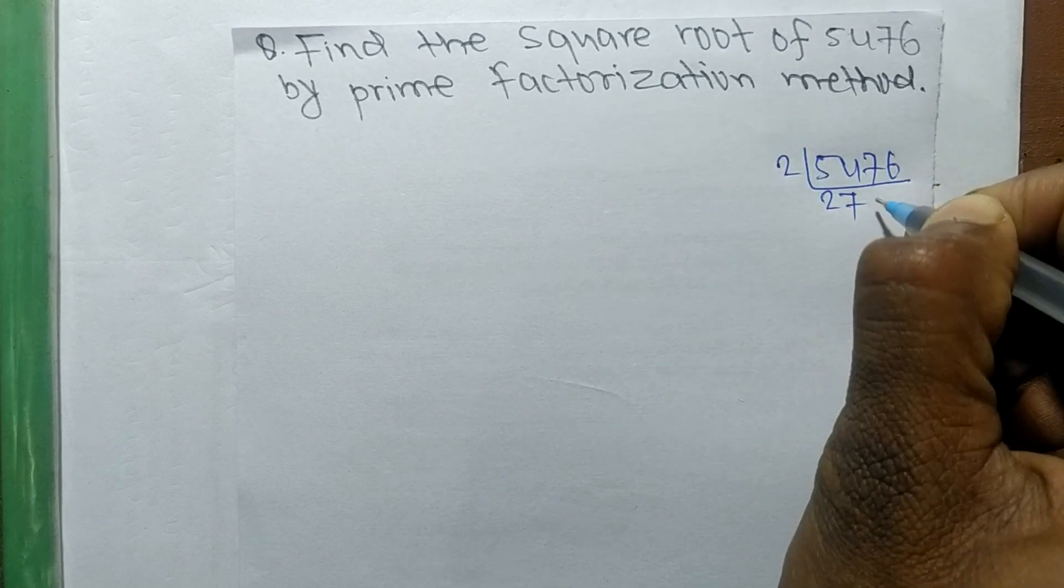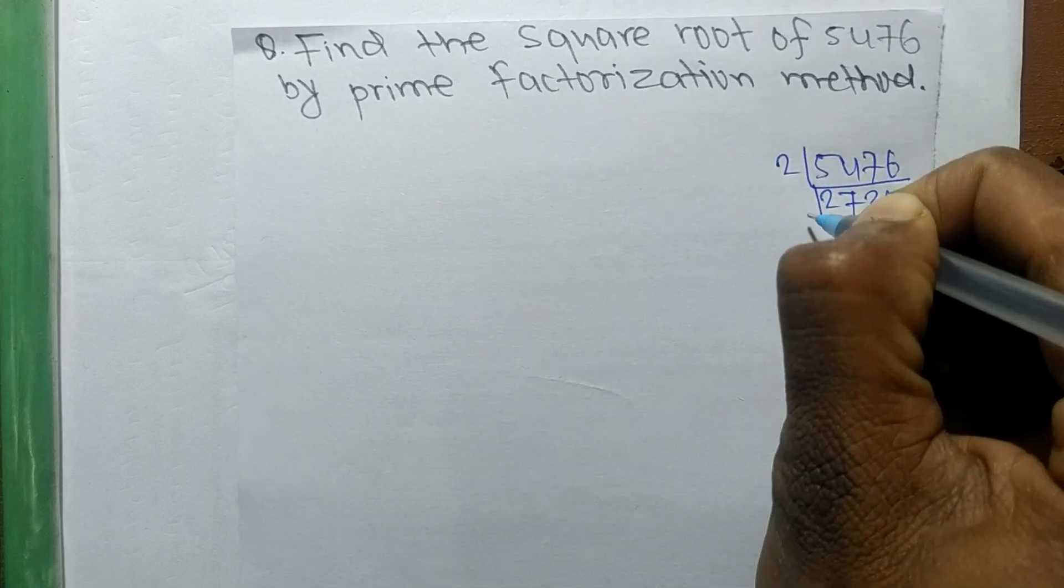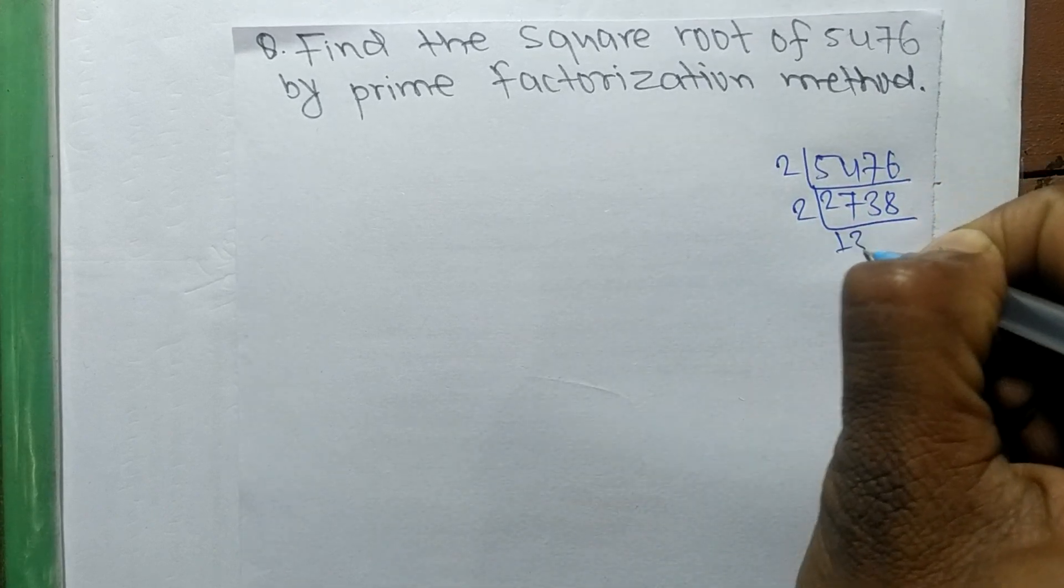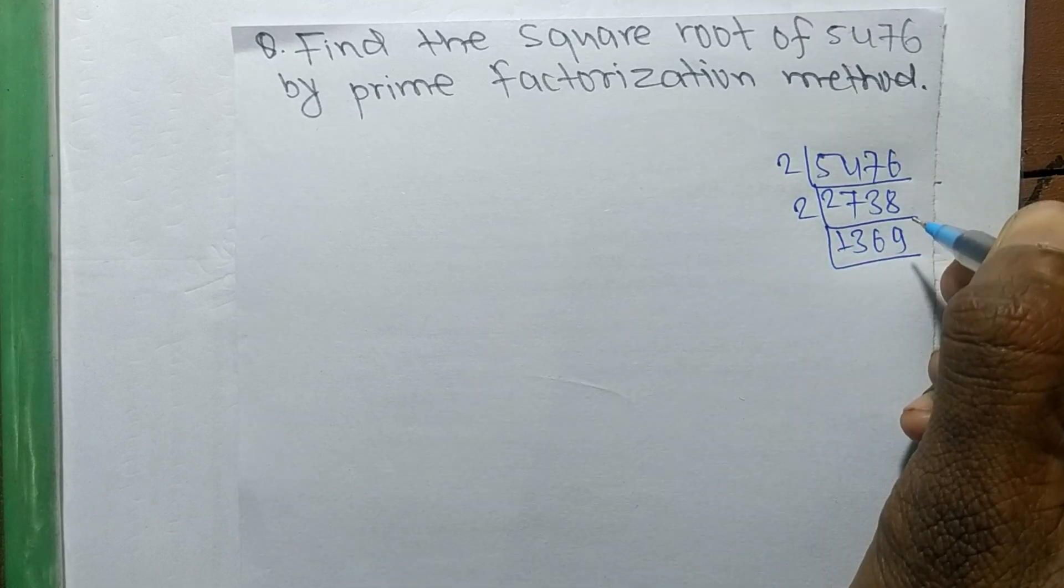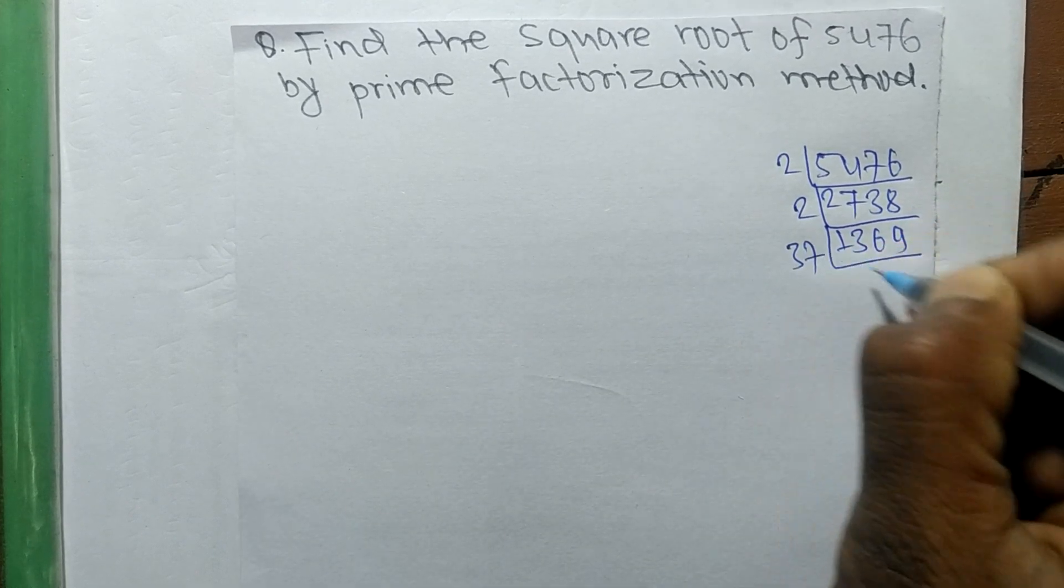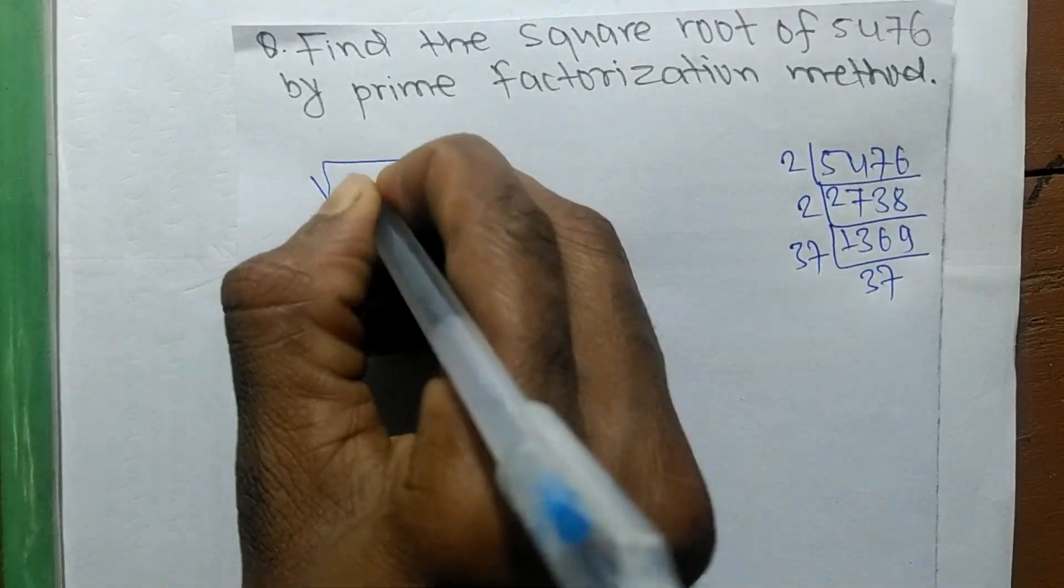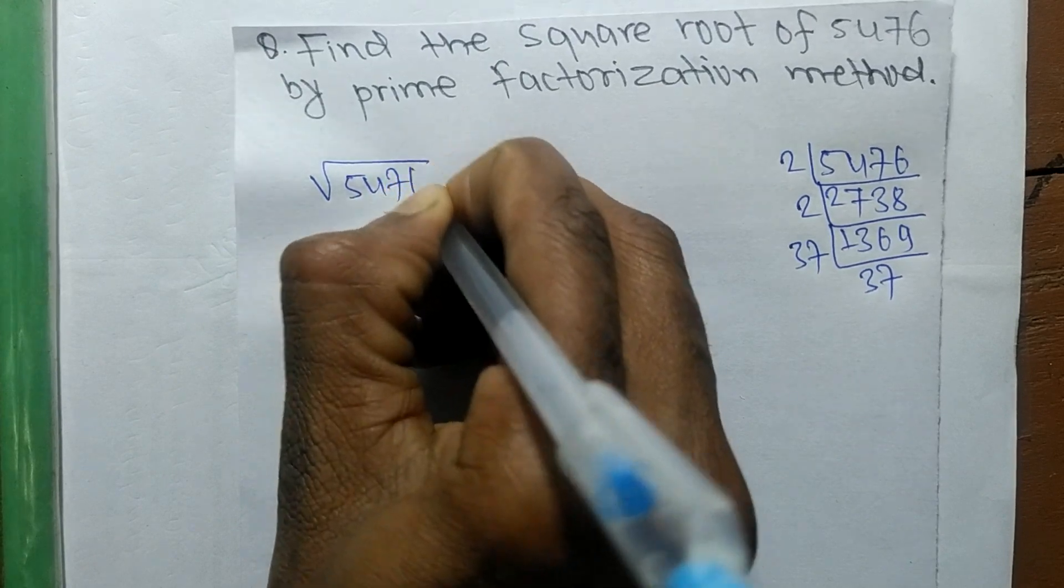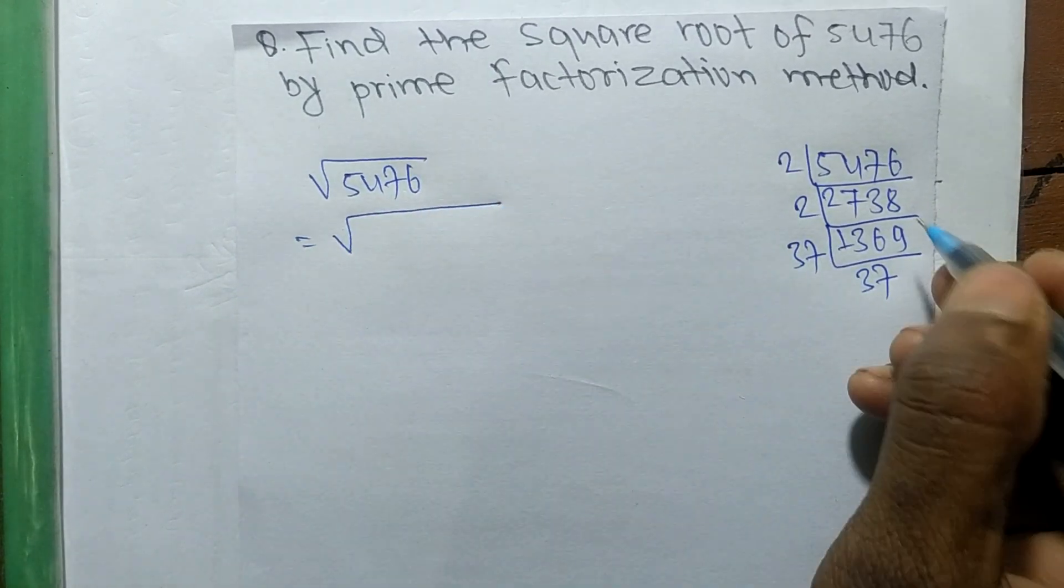So it is 2, 2738, so again it is 2, 1369. So again we can write it 37 times 37. So the square root of 5476 is equal to, so now we write down the prime factors of all these numbers.